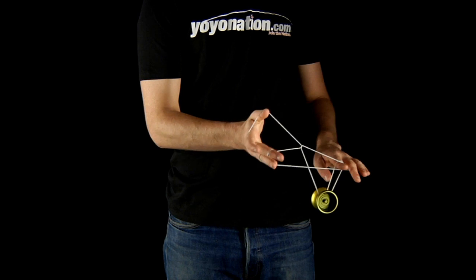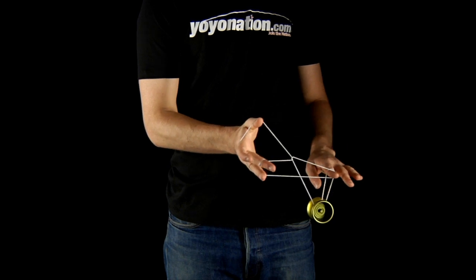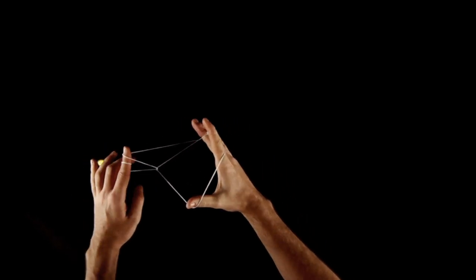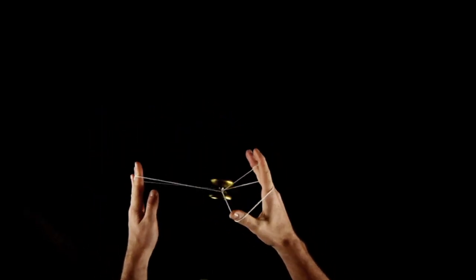Dismount as you would for a spirit bomb dismount, but do not drop any of the strings. Instead, open your throwhand, swing the yoyo through that opening, and land again on the bottom string.